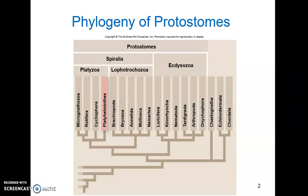Today we're going to talk about some of the Platyzoa. We'll talk about Platyhelminthes as well as Rotifera, and then we'll talk about the annelids and the mollusks, which are the major groups of Lophotrochozoans. Then, towards the end of the chapter, we'll move on to talk about nematodes and arthropods, the biggest groups of Ecdysozoans.